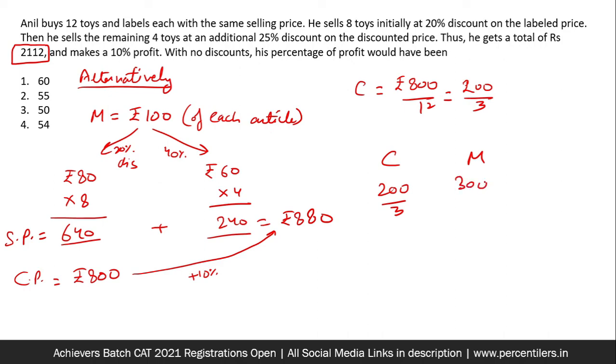Now you know that CP is 200 by 3 and marked price is 100, that is 300 by 3. What is the ratio between CP and MP? 2 is to 3, that's a 50% profit. Here also, we get the answer as 50% because if there is no discount, all the articles will be sold at marked price.